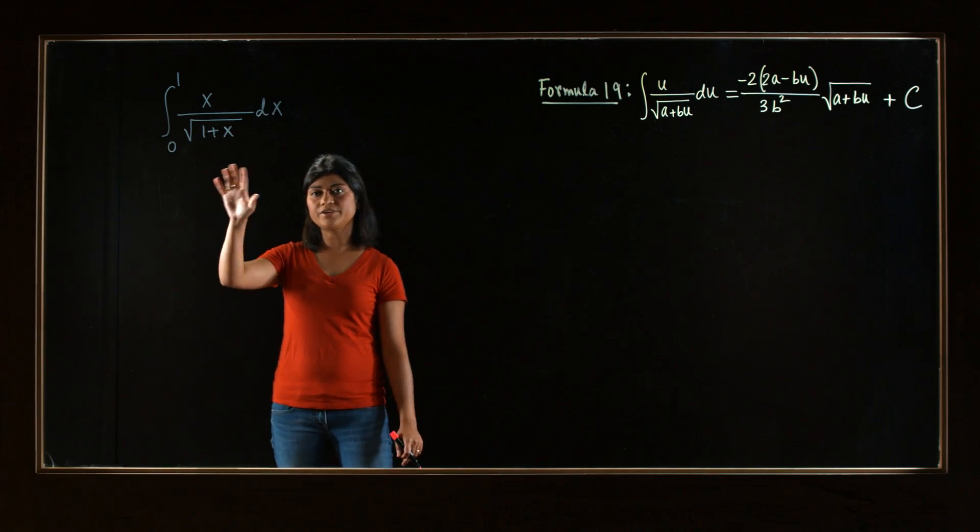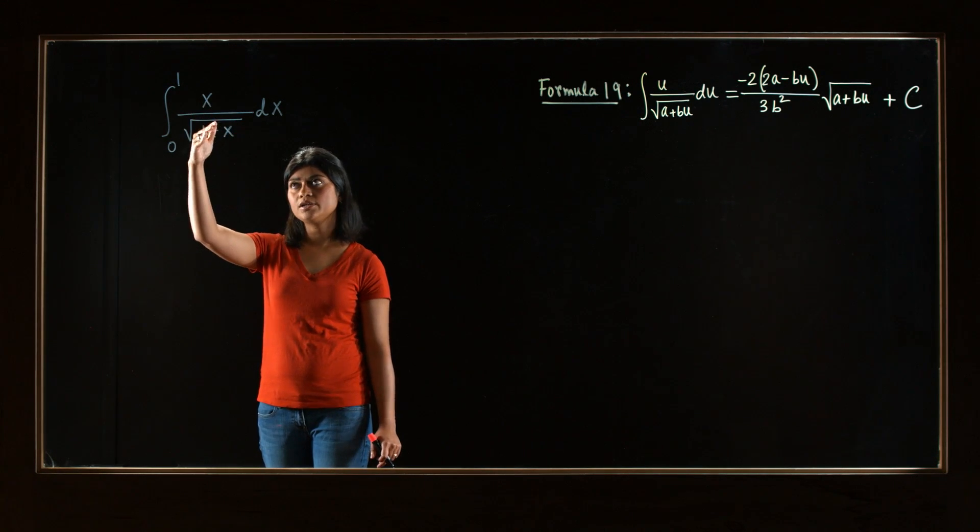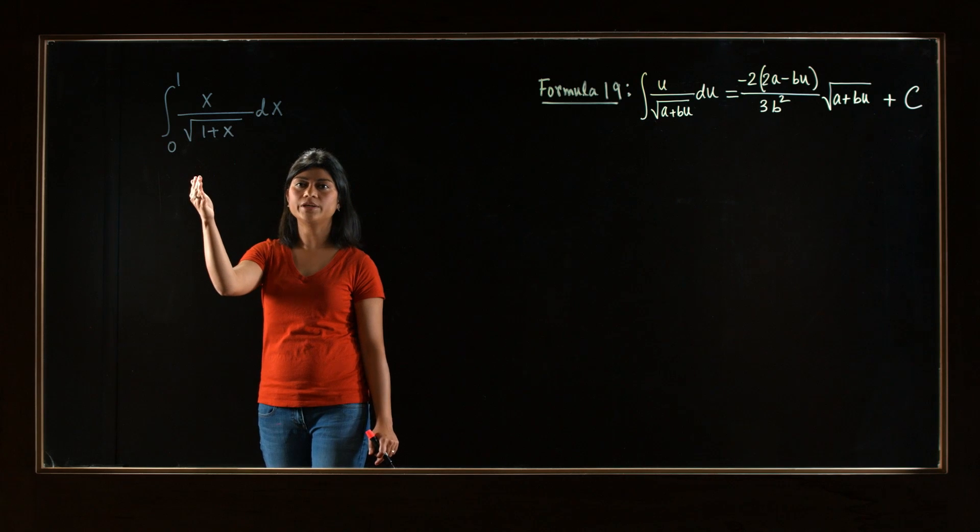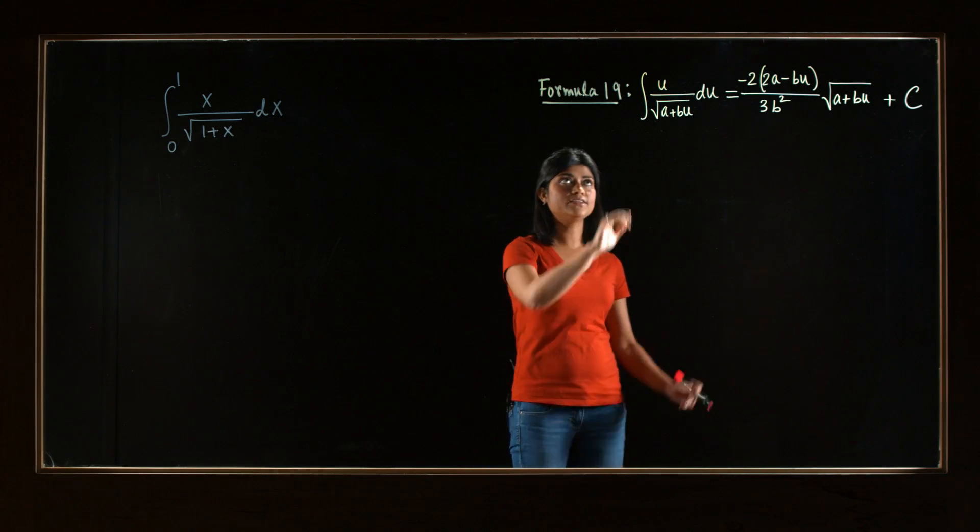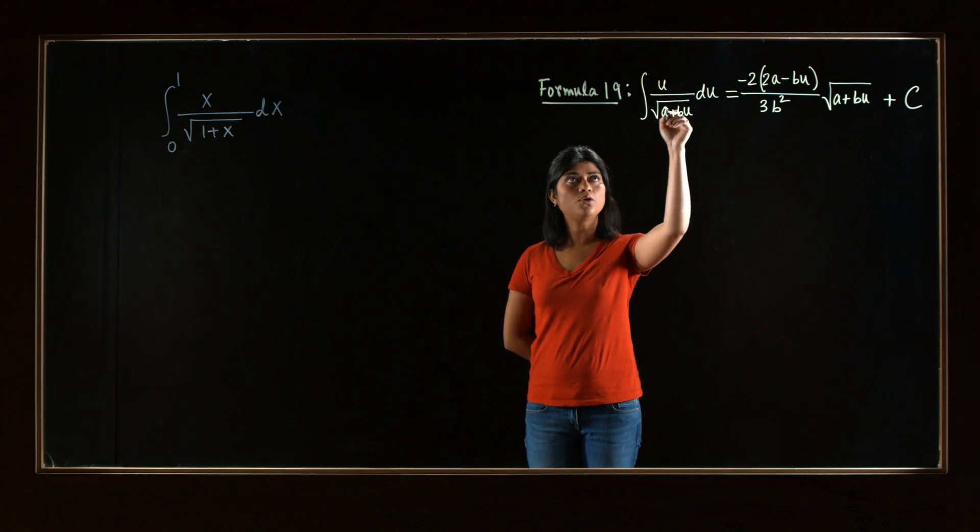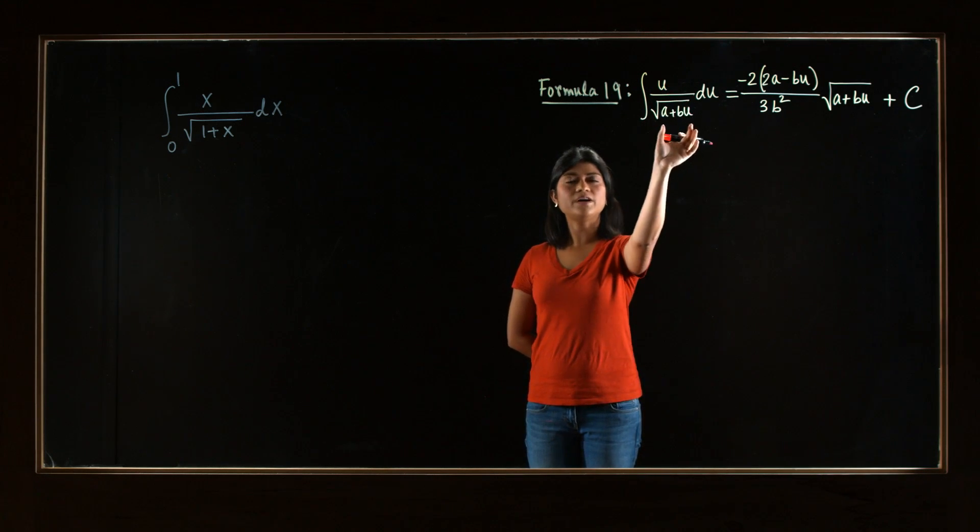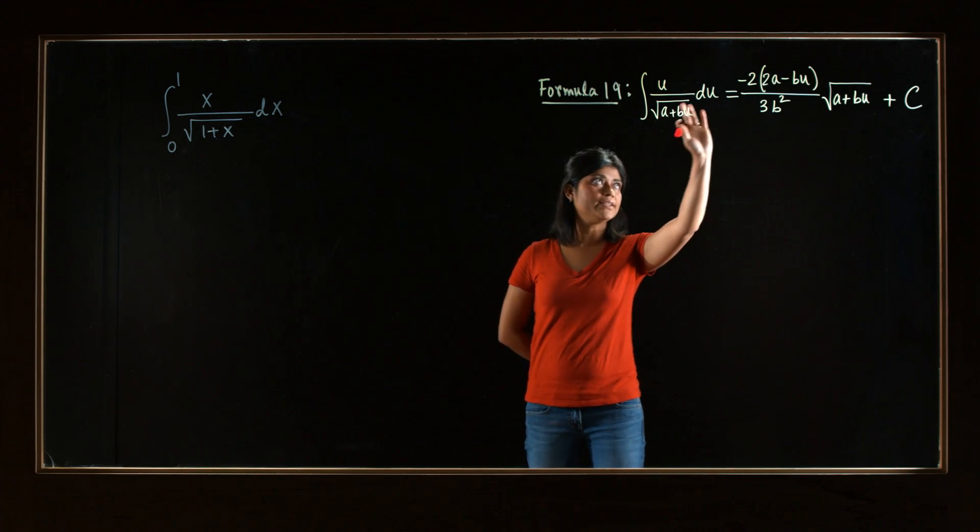Now, if you look at all the various formulas, try to find one where you have a quotient and you have a square root in the denominator. So if you notice, there's formula 19, which has this form. It's the integral of u over square root of a linear factor, a plus bu. And then this is the formula.